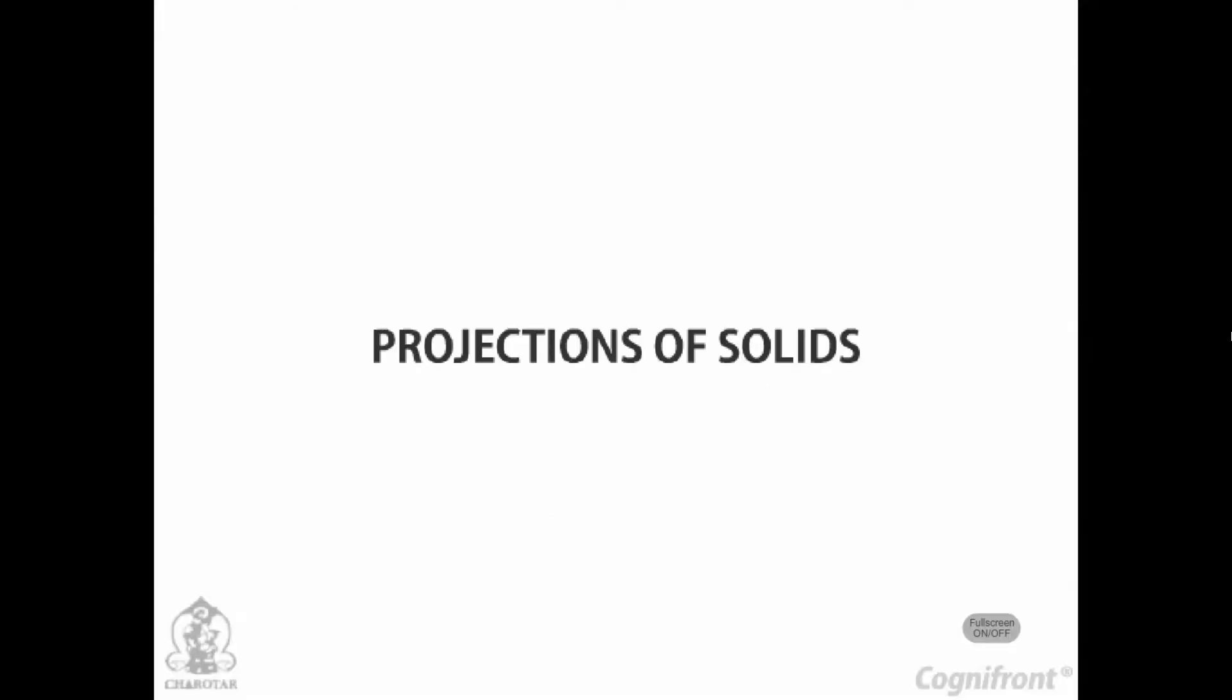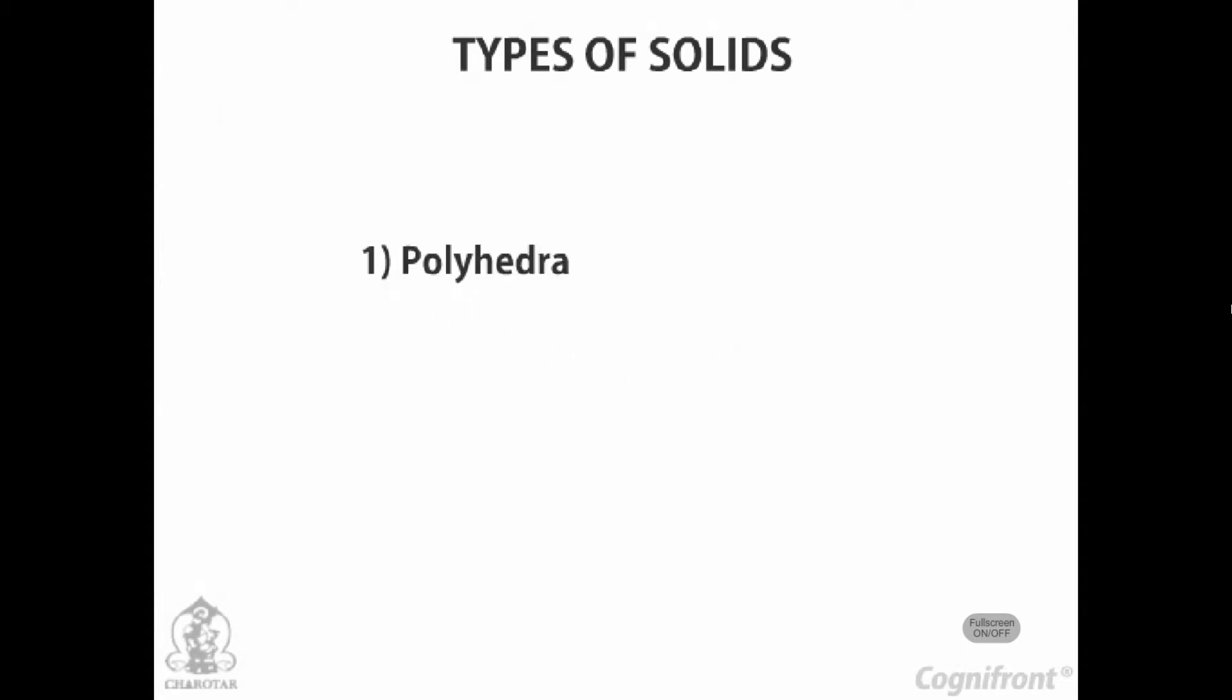Projections of solids. Types of solids. Solids may be divided into two main groups: polyhedra and solids of revolution.